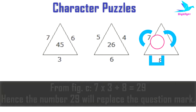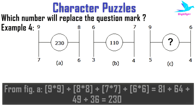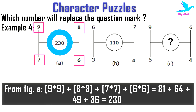In example four, we see three figures A, B, C with a question mark at figure C. Looking at figure A, the relation is: the summation of the squares of the four numbers gives the central number — that means 9² + 8² + 7² + 6² = 81 + 64 + 49 + 36 = 230.